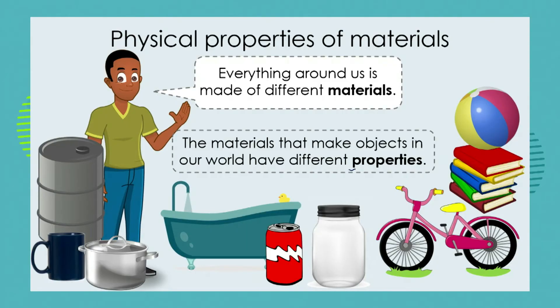Every material has a particular property. If we look at these common objects that you may be familiar with from your own homes and lives, we know that a bath, for example, is made out of a completely different material to a beach ball. It's important that we choose the material to make an object in such a way that the material is suitable for whatever function that object has to play.